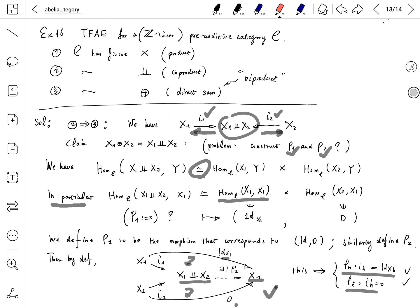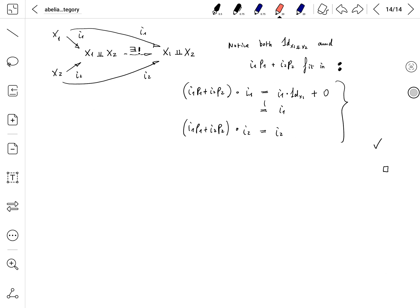What is left is this: I1 P1 plus I2 P2 equals identity. But for that one, we use the universal property again.